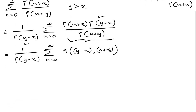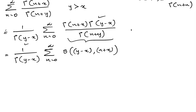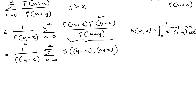Then we know the beta function can be converted using its integral representation: beta(m,n) equals the integral from 0 to 1 of t^(m-1) times (1-t)^(n-1) dt. Therefore, we can write the expression using this integral form.